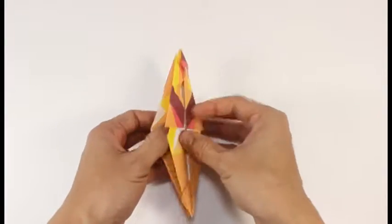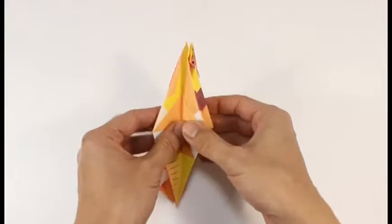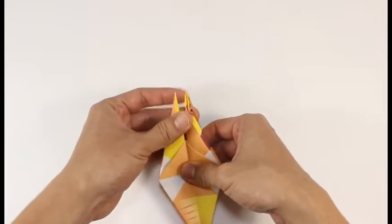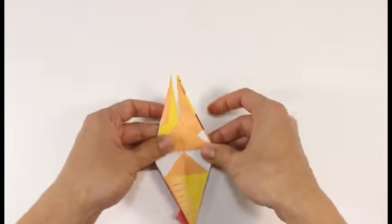We're going to turn to the side and without folding the flaps off the wings, close the head and the tail.